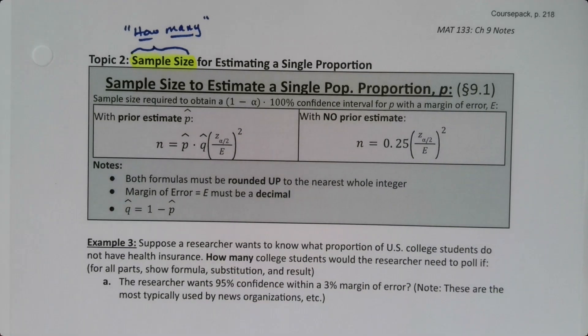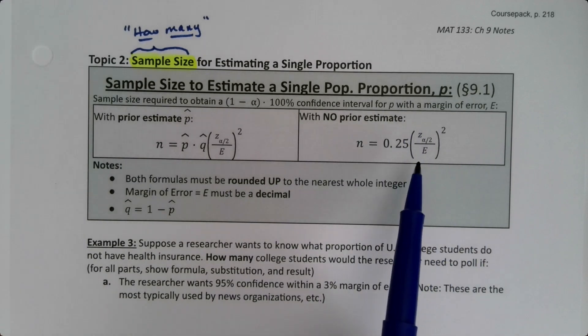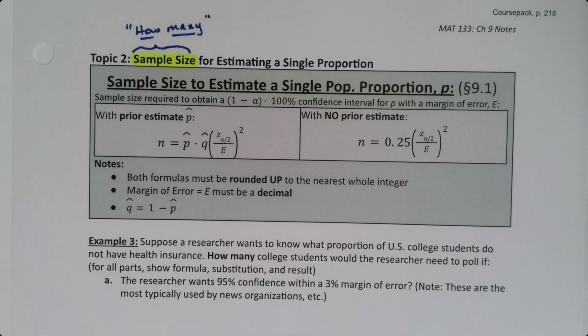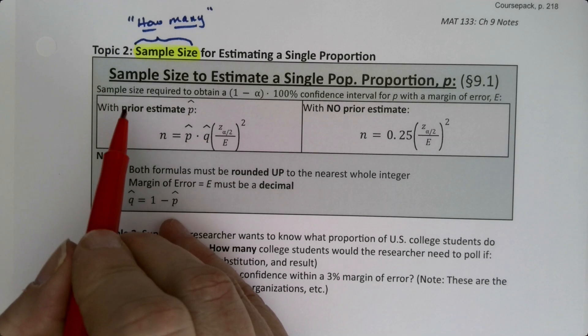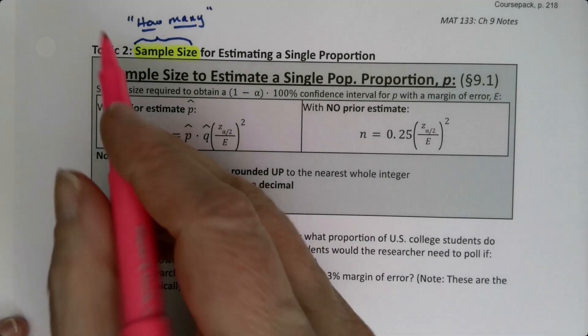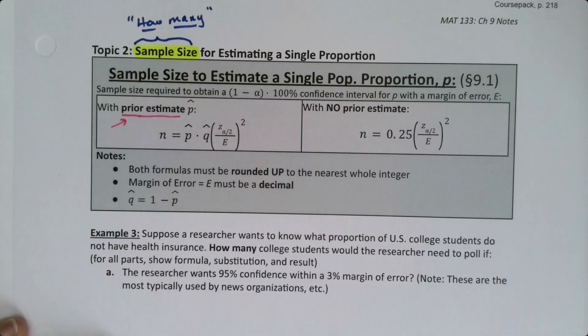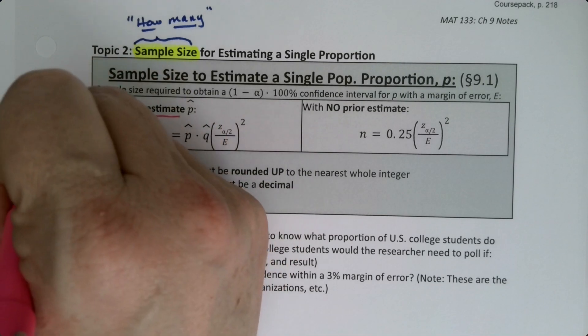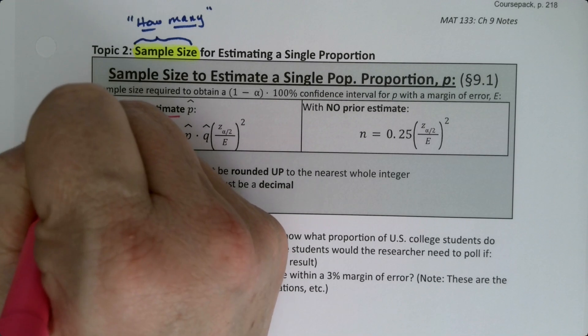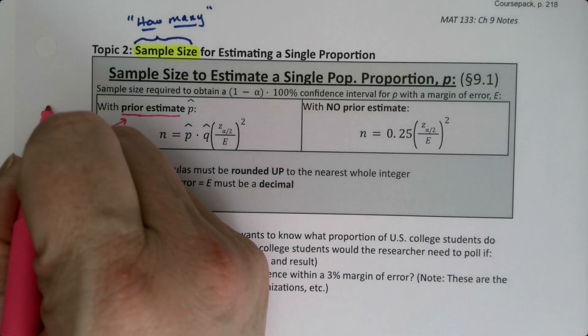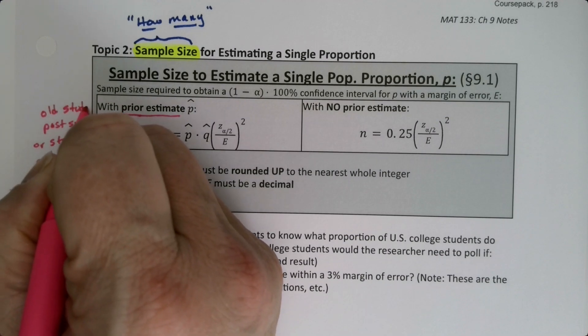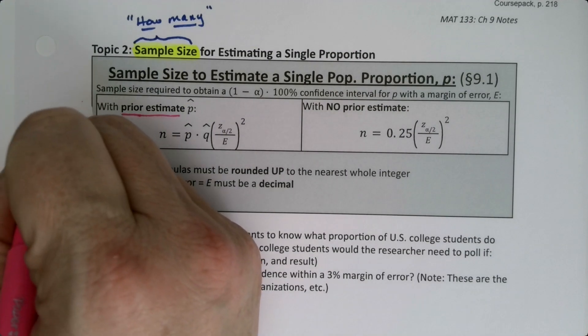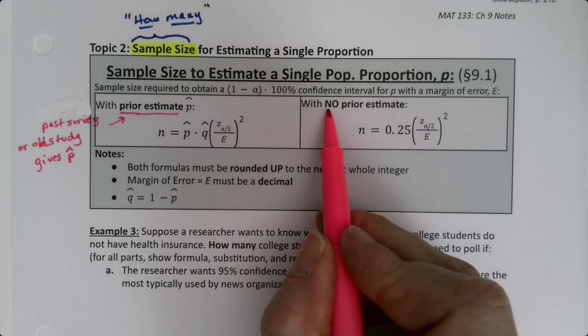It depends on a lot of things: the confidence level that you want and the margin of error that you're willing to live with. We have two formulas here on the exam formula sheet, so you don't have to memorize them. It's just a question of knowing which one to use when. The one on the left has a prior estimate from a past survey or old study that gives a p-hat. This one is when we have no old study available, no past data.